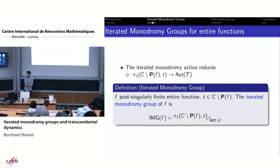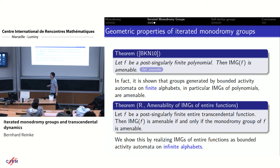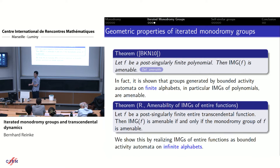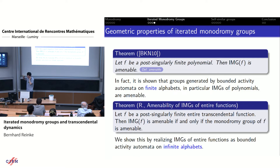Now that we have defined iterated monodromy groups for entire functions, I want to compare them to iterated monodromy groups for polynomials. There is a result by Volodia, Laurent, and Karim Kaimanovich that if you take a post-singularly finite polynomial, then its iterated monodromy group is amenable. The way they showed it is by showing that groups generated by bounded activity automata on finite alphabets are amenable, and by the work of Volodia and Laurent, iterated monodromy groups of polynomials are of this form.